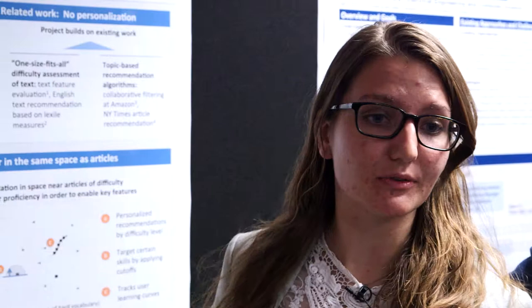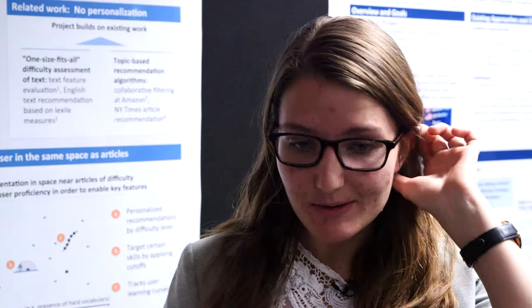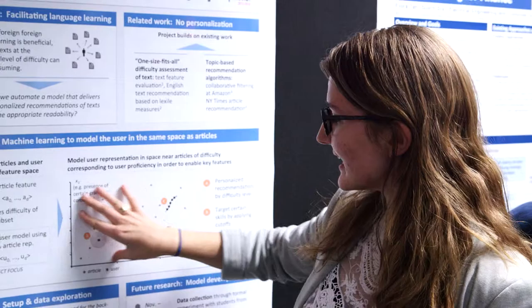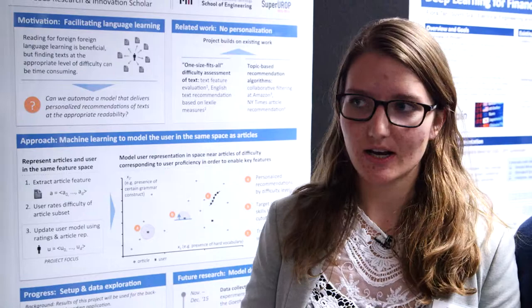The approach we're taking is we're extracting certain features from the articles, modeling them in a feature space, and then we aim to model the user in the same feature space. We hope that a user that's close to an article in this space will find those articles at a good level of difficulty.